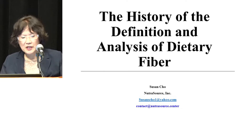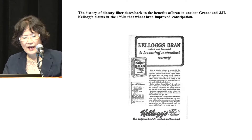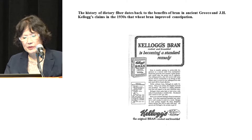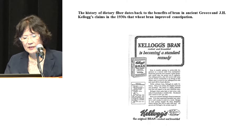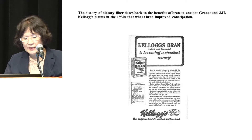The history of dietary fiber dates back to the benefit of bran in ancient Greece and John F. Kellogg's claim in the 1930s that wheat bran improved constipation. In the 1930s, Kellogg had a promotion, and Kellogg's bran became a standard remedy for constipation.